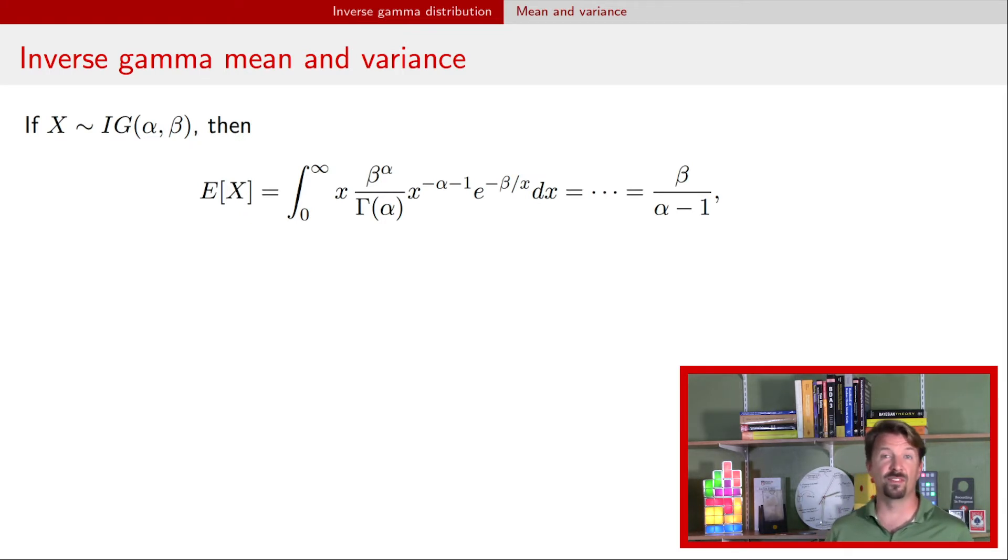The mean and variance of an inverse gamma distribution can be found using a PDF. So the expectation here is beta divided by alpha minus 1, and if you're thinking about this, you might notice something seems a little odd here, because what happens if alpha is less than 1? Remember, alpha only needed to be greater than 0.